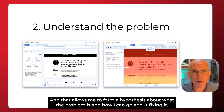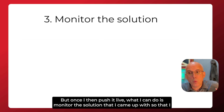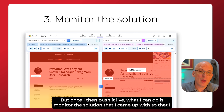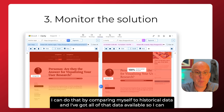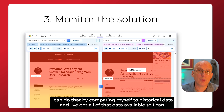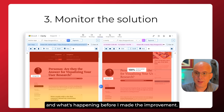That allows me to form a hypothesis about what the problem is and how I can go about fixing it. I might test my fix using A/B testing or usability testing. But once I push it live, I can monitor the solution I came up with to ensure it's outperforming the previous version. I can do that by comparing it to historical data — I've got all of that data available, so I can see what's happening after I've made the improvement versus what was happening before.